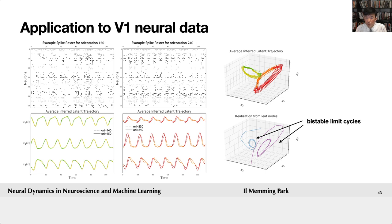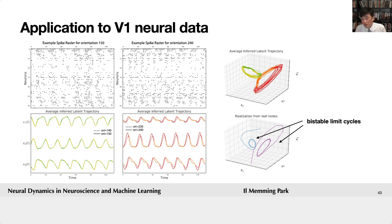We also applied this to V1 data where V1 was driven by drifting gratings. The drifting grating was a periodic signal driving the V1 population in two different ways. The model described each drifting grating condition as two different limit cycle systems, split in half. Simulating from the system finds these limit cycles, which cannot happen with a single linear dynamical system, but since we combine multiple linear dynamical systems, it can produce limit cycle dynamics.